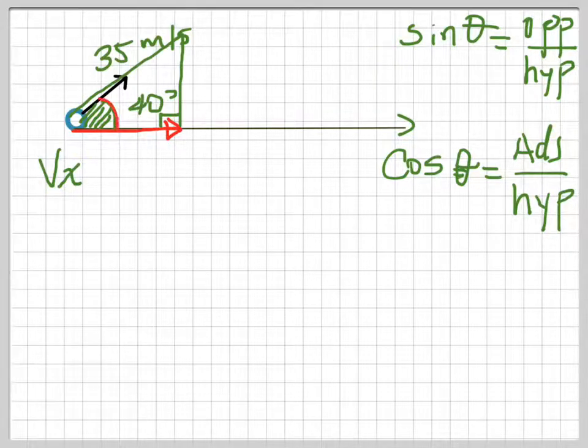In reference to this angle, the one we're looking for is the adjacent. Adjacent means next to. If we were looking for the opposite, that would be the y component, Vy. But in this case, we're looking for Vx.